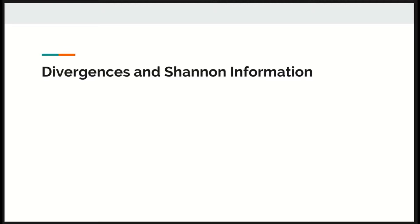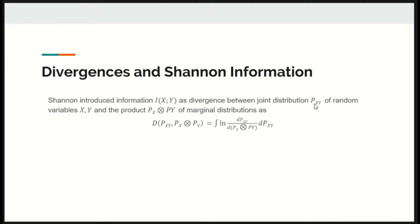Divergences and Shannon information. Shannon introduced the information I(X;Y) as the divergence between the joint distribution of random variables X and Y and the product P_X times P_Y of marginal distributions as follows.